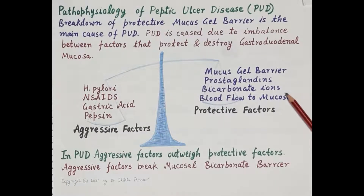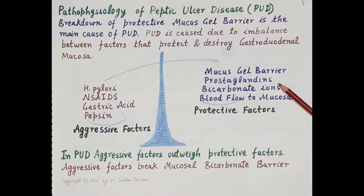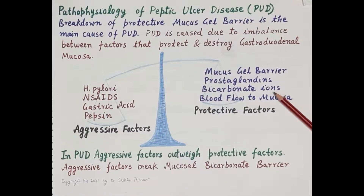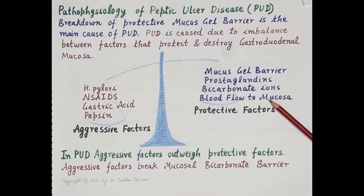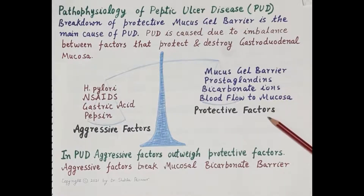Protective factors are those that protect the mucus gel layer. These include: secretion of mucus for the formation of the mucus gel barrier; production of prostaglandins — specifically PGE2 and PGI2 — which stimulate synthesis of mucus and bicarbonate ions by mucosal epithelial cells; bicarbonate ions, which neutralize acid diffusing into the gastroduodenal mucosa; and a rich blood supply to the mucosa, which helps in rapid regeneration of injured mucosal epithelial cells.